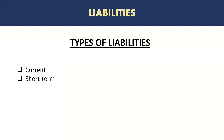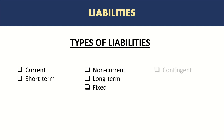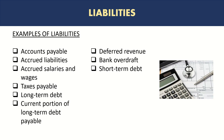There are types of liabilities similar to assets: there is a current or short-term liability, a non-current or long-term liability, and another category which is contingent liabilities. If we look at our list and need to identify the current liabilities...